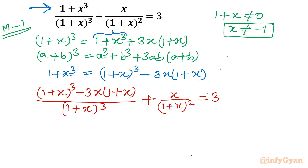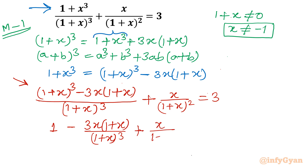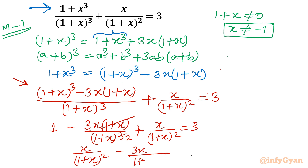Now I will split the numerator for the first term only. So I can write 1 − [3x(1 + x)/(1 + x)³] + x/(1 + x)² = 3. The (1 + x) cancels, and moving the 1 to the right-hand side gives: x/(1 + x)² − 3x/(1 + x)² = 2.